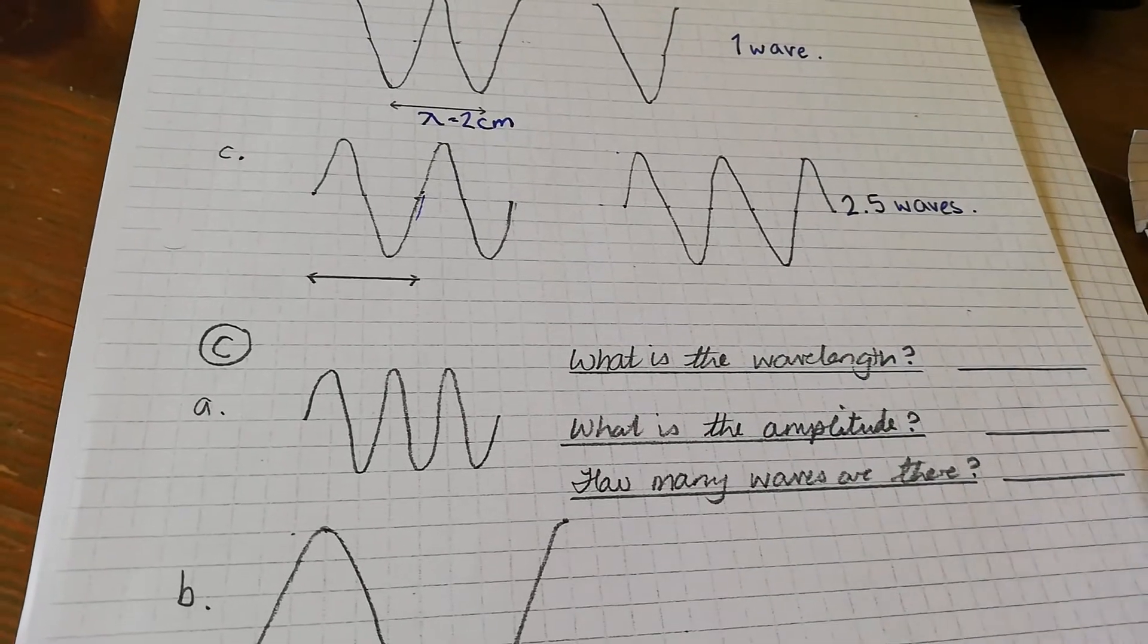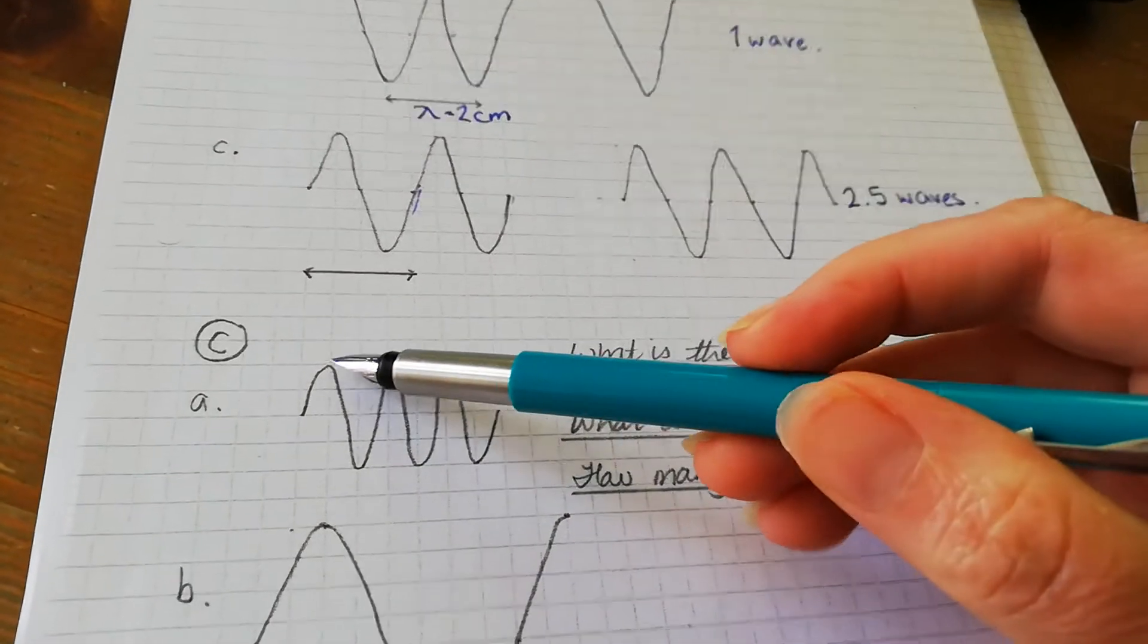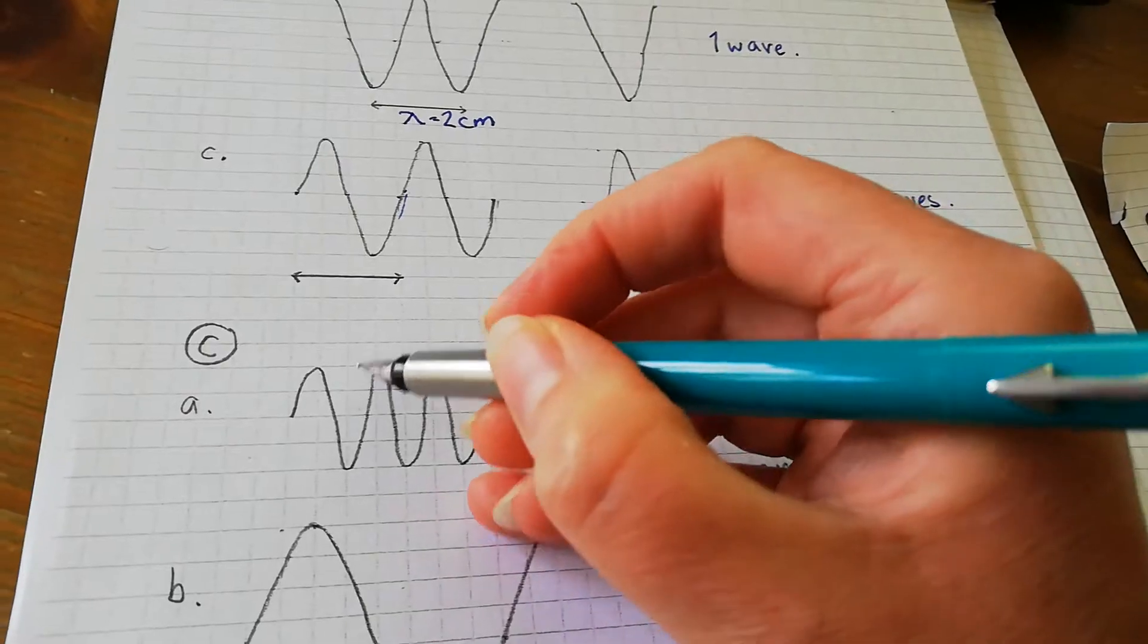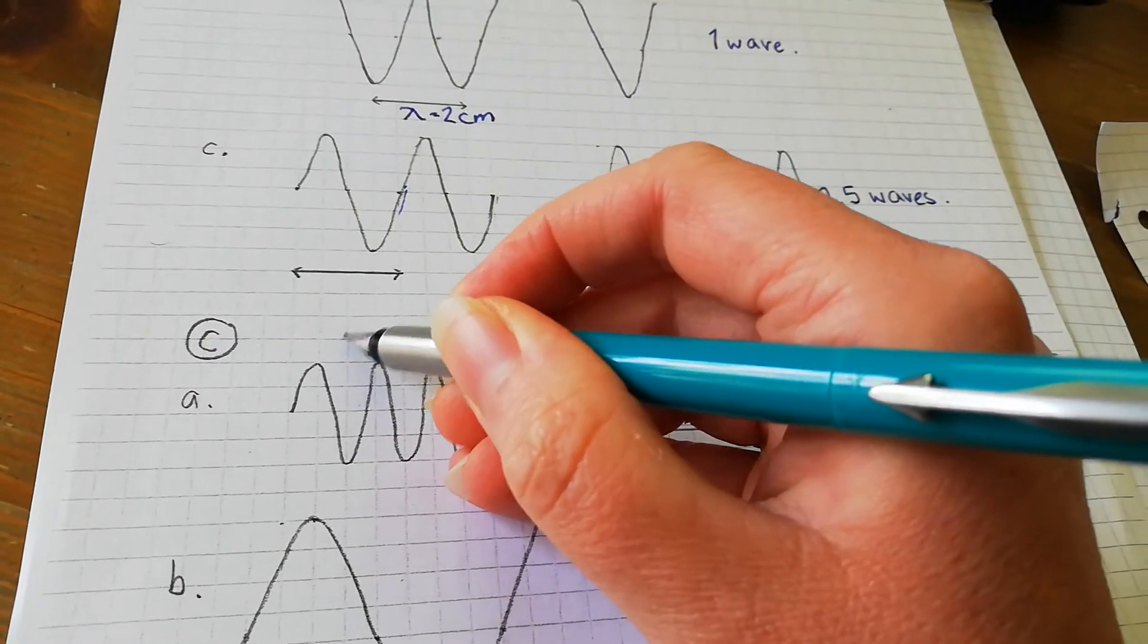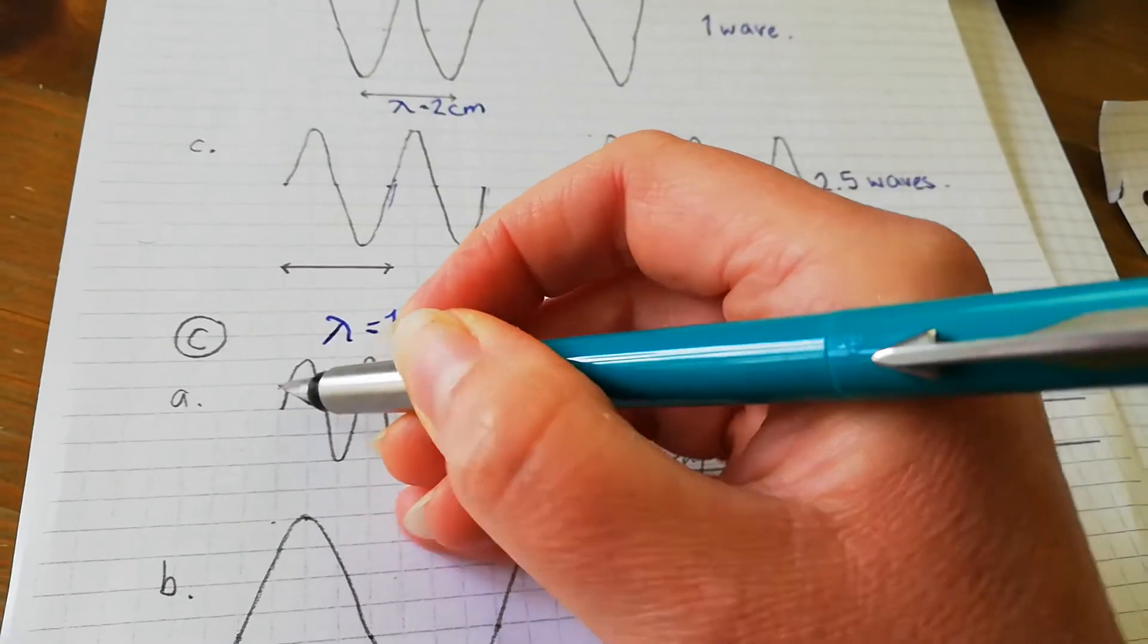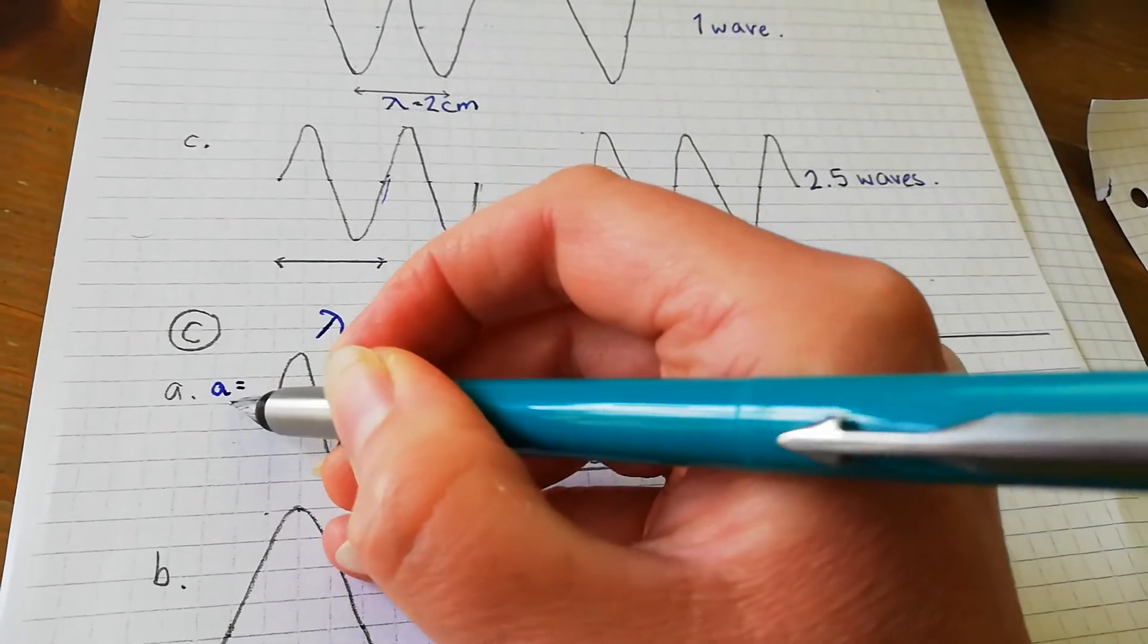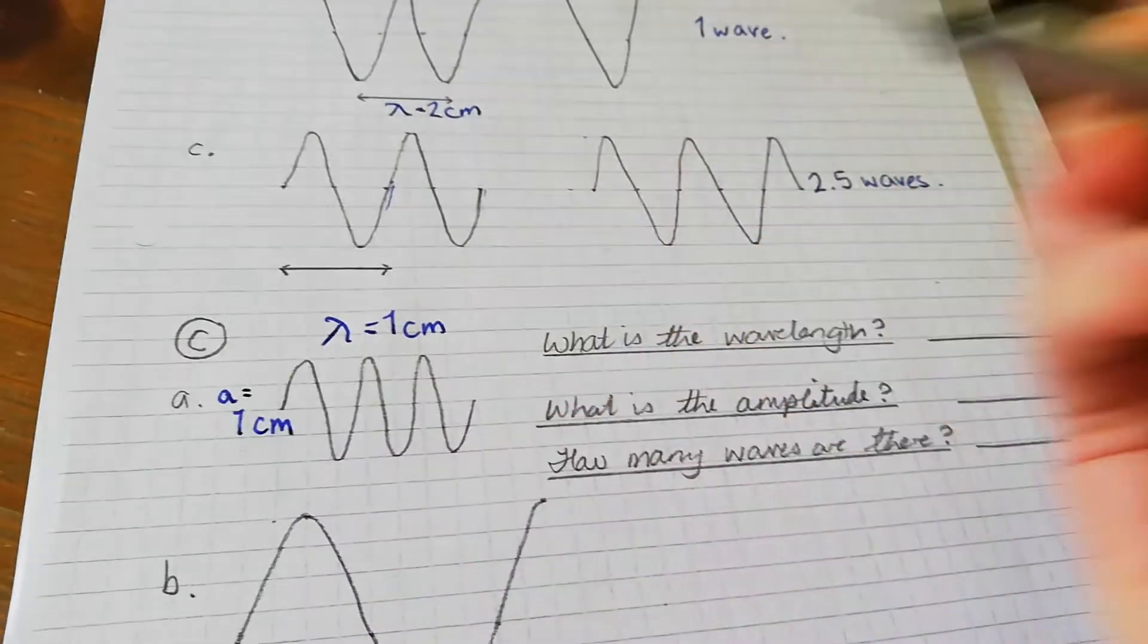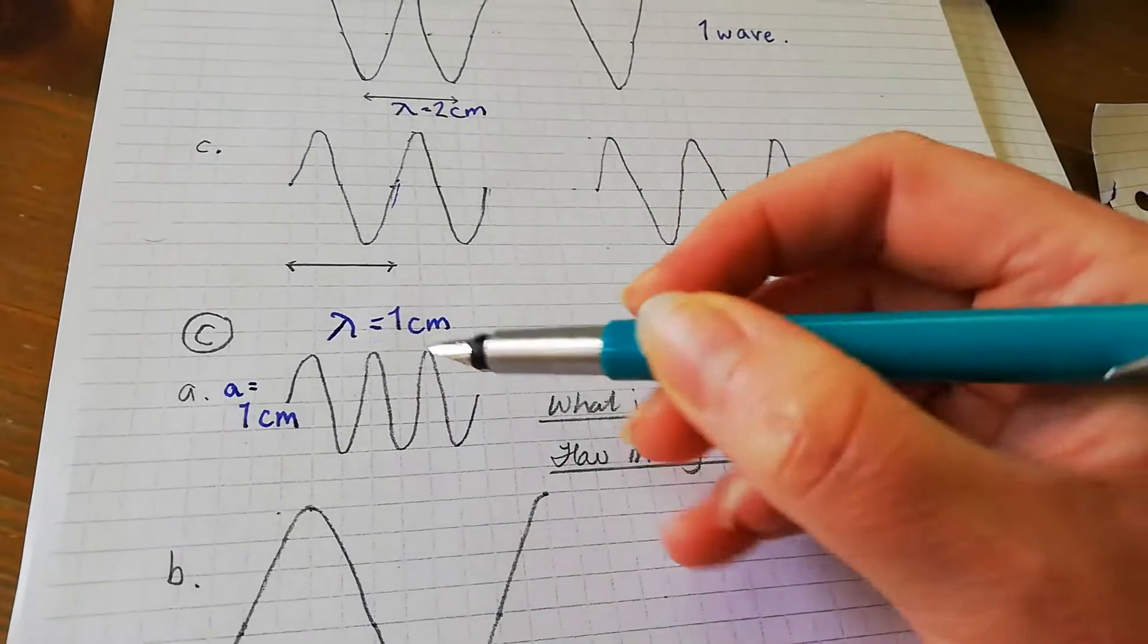Well, the wavelength is two boxes, so that is going to be one centimeter. The amplitude is two boxes, so the amplitude is also one centimeter.